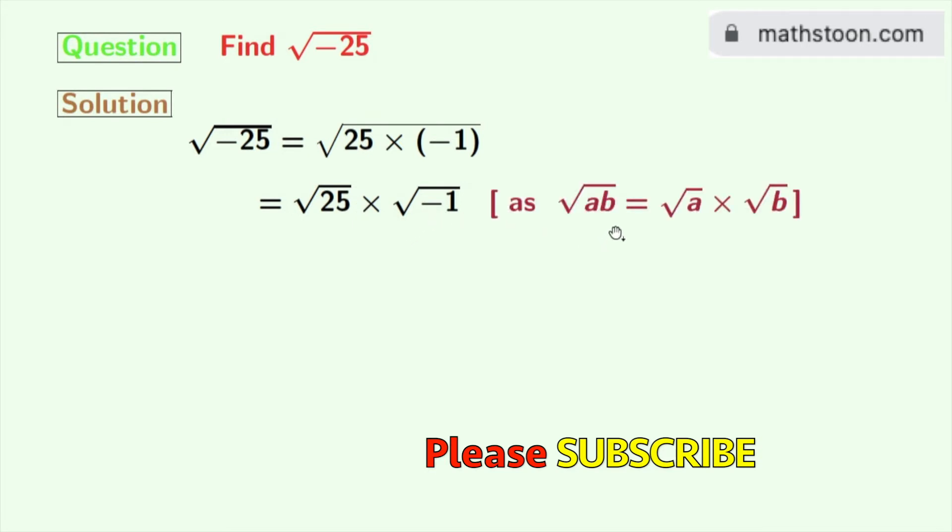As we know that square root of ab is equal to square root of a times square root of b. Here a is 25 and b is minus 1. Now we all know that square root of 25 is plus minus 5.